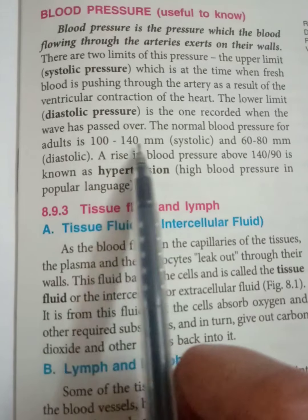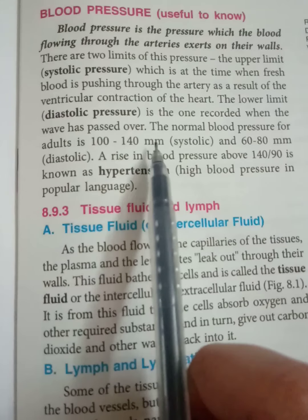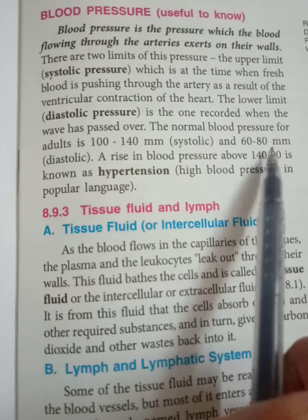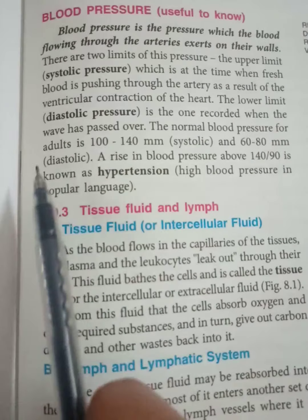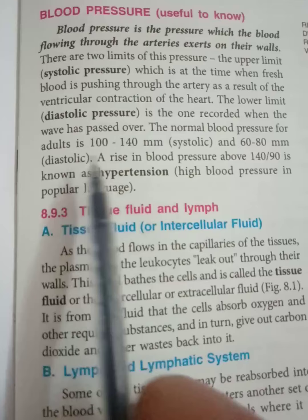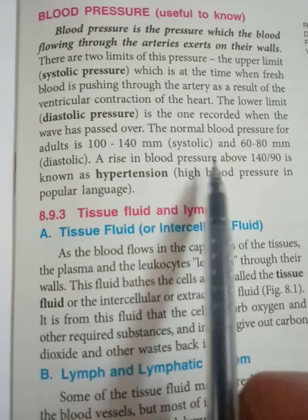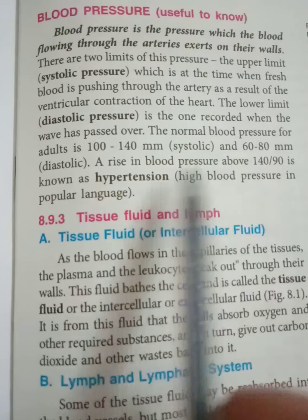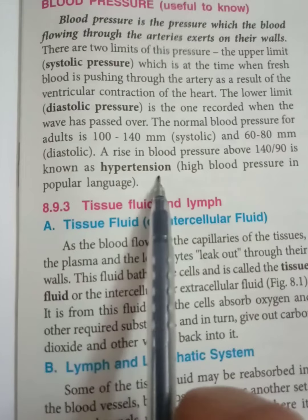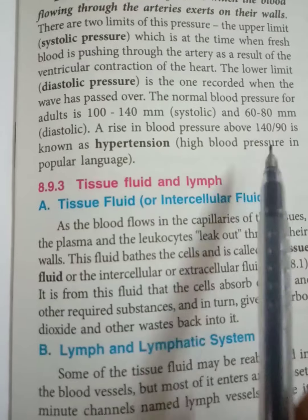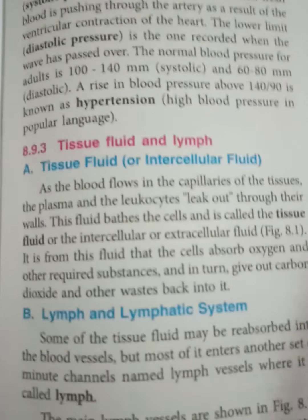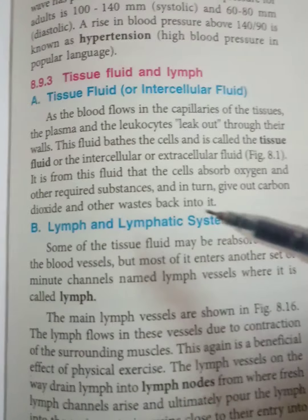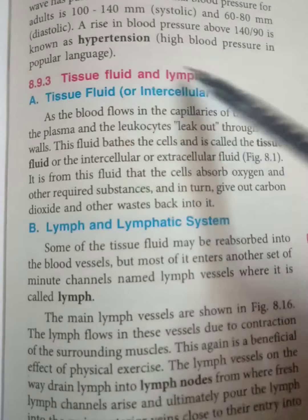Normal blood pressure for adults is 100 to 140 mmHg systolic and 60 to 80 mmHg diastolic. A rise in blood pressure above 140/90 is known as hypertension — high pressure in popular language. Then comes tissue fluid and lymph.